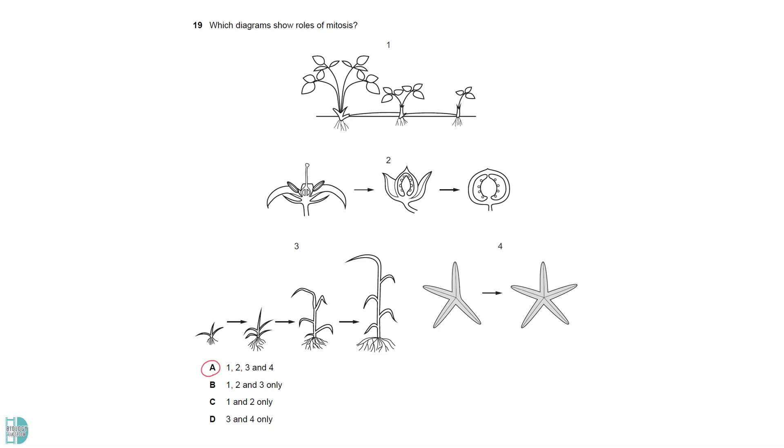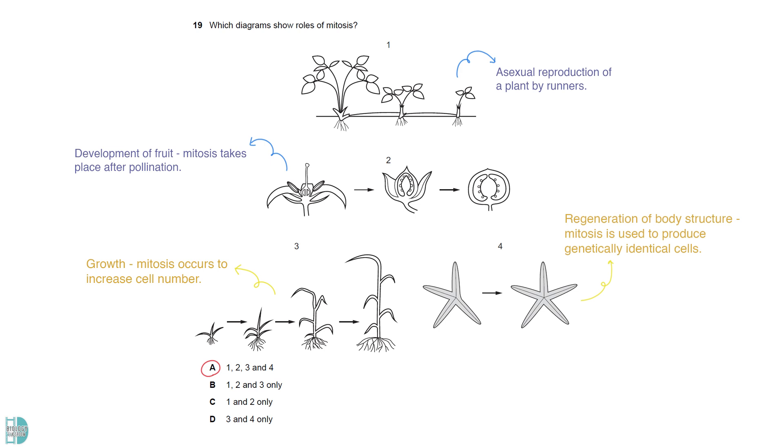All 4 of the diagrams show the roles of mitosis. 1 is the asexual reproduction of a plant by runners. 2 shows the development of fruits. Mitosis takes place after pollination. 3 is the growth of a plant by increasing cell number. 4 is the regeneration of body structure. Mitosis is used to produce genetically identical cells.